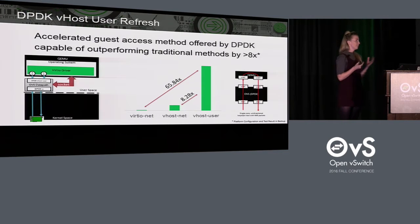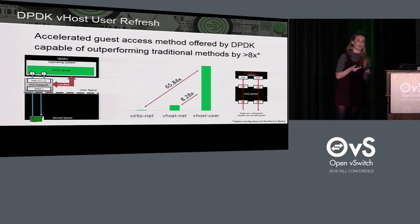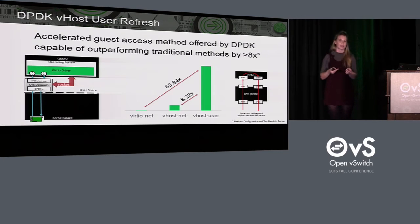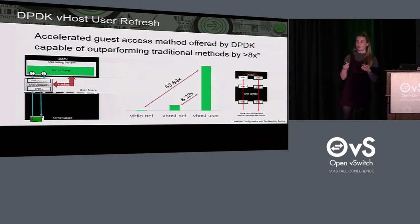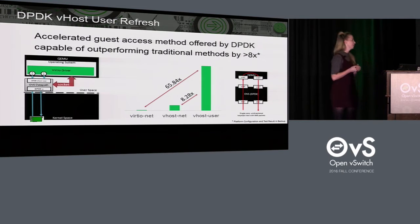You can see in the graph that vhost user outperforms both of those by quite a margin, thanks to the reduction in kernel processing. Basically, vhost user is an accelerated virtual interface offered by OVS DPDK, and we're going to look at some incremental improvements made to the library in DPDK and how that's impacting Open vSwitch.